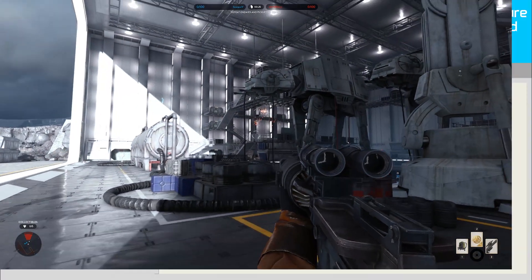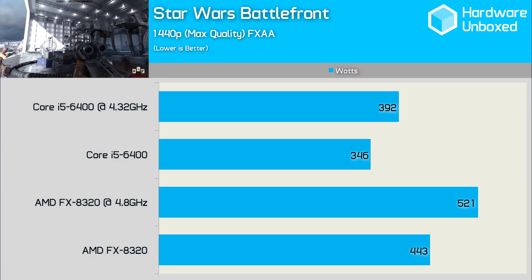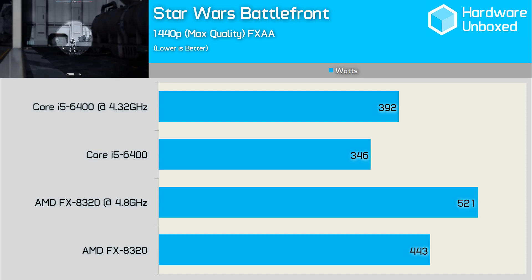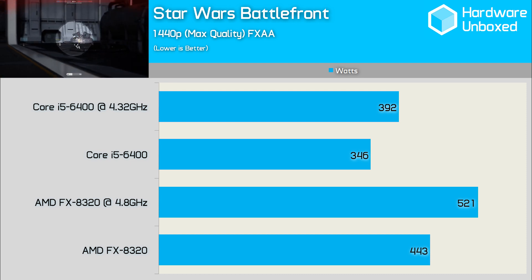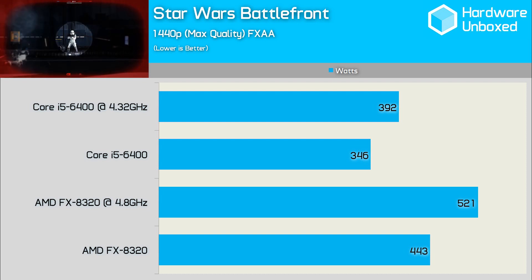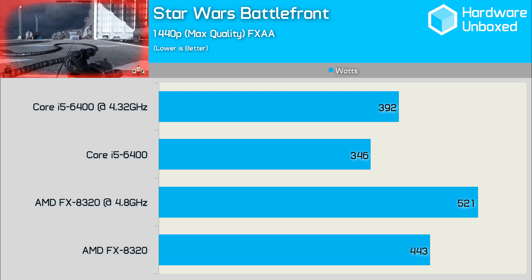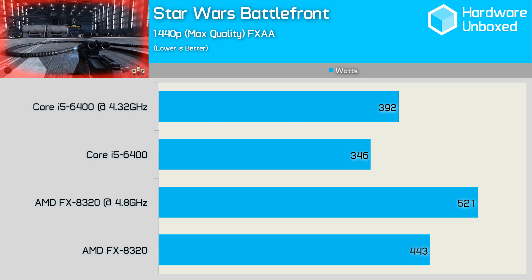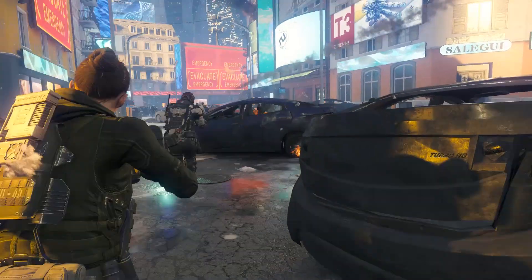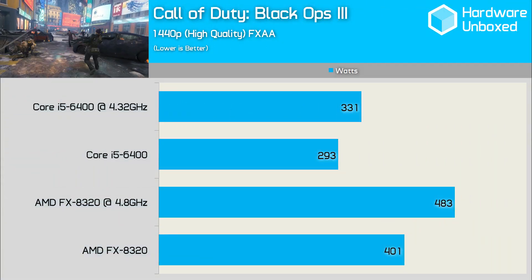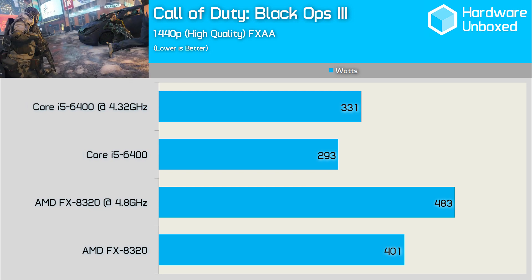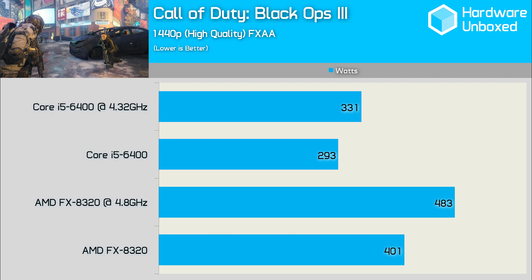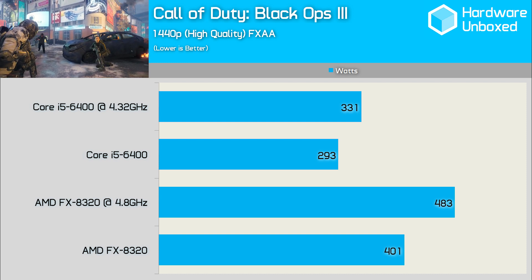In the out-of-the-box configurations, the Core i5-6400 consumed just over 20% less power than the FX8320. Once overclocked, that figure increased — it was striking to see the power meter reading over 500 watts for the AMD system and just shy of 400 watts for the Intel system, given the relative performance. The margins were even greater with Black Ops 3, where the Core i5-6400 consumed 27% less power and over 30% less once both processors were overclocked.